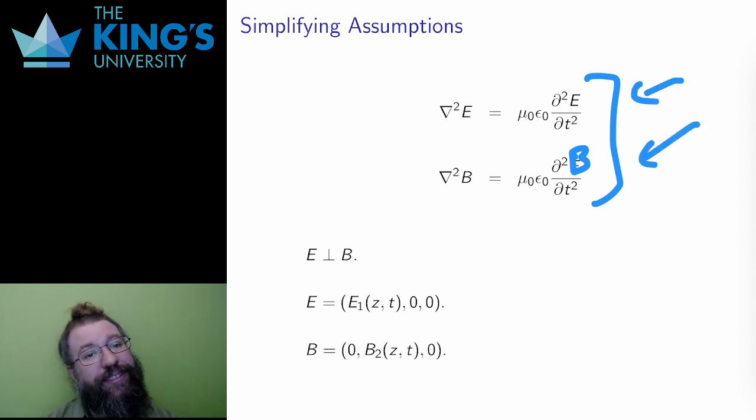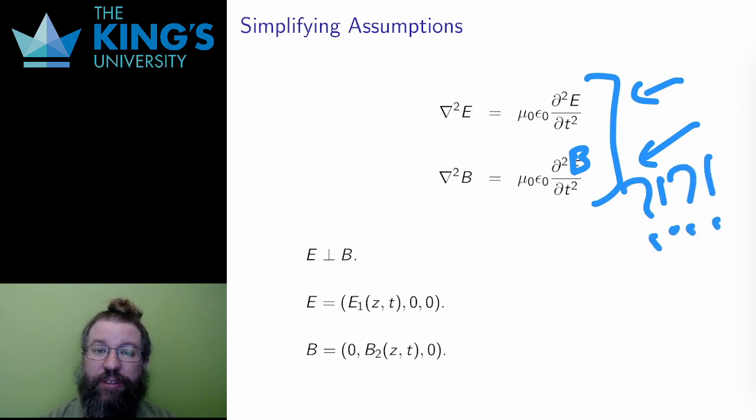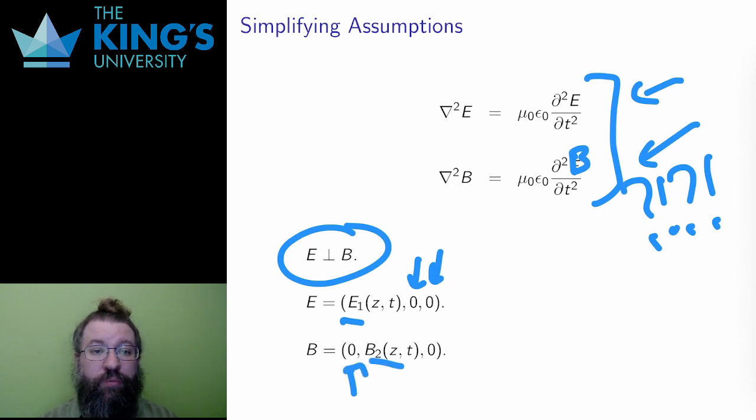However, these are still too difficult to solve. Therefore, I'm going to make a number of assumptions to see if there's a solution that fits my assumptions. I'm going to assume that E and B are perpendicular to each other everywhere. Remember, E and B are vector fields, so the vectors they can output can certainly be perpendicular vectors. I'm also going to assume that E only exists in the first component, and B only in the second component. Lastly, each of them is only going to depend on the third variable z and on the time t. Alright, that's a whole pile of assumptions, but maybe there is still a solution.